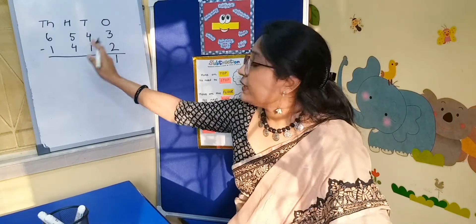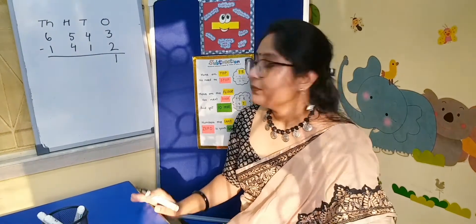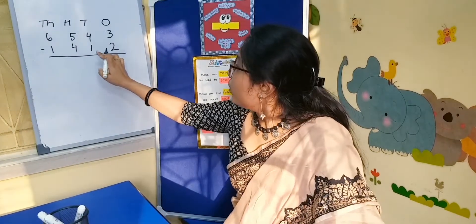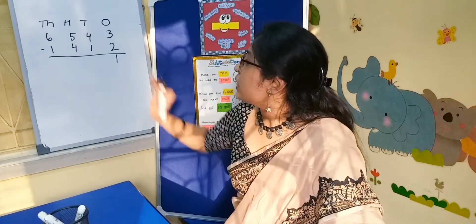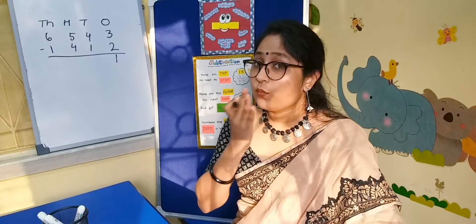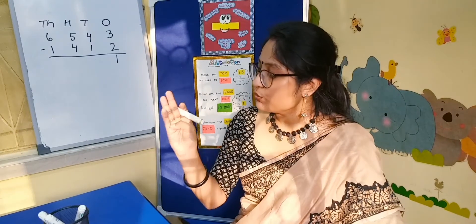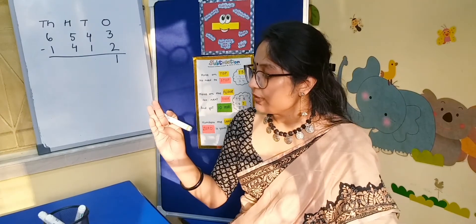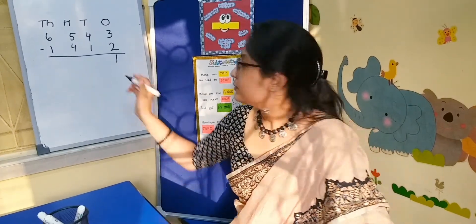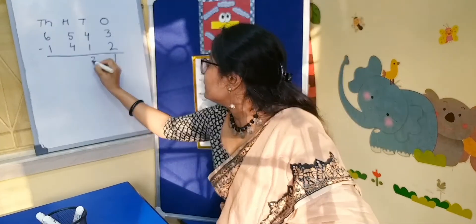Now come to the tens column. From 1 we have to count to 4: 1, 2, 3, 4 — so 3 here.